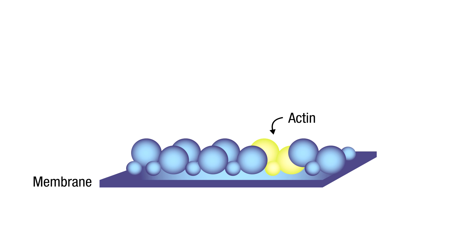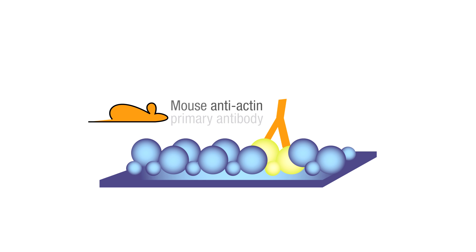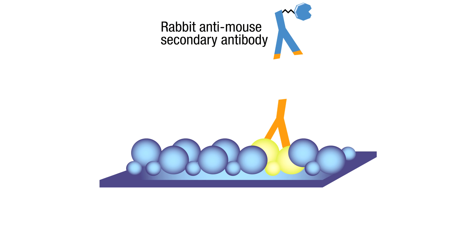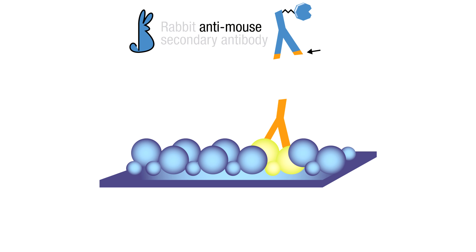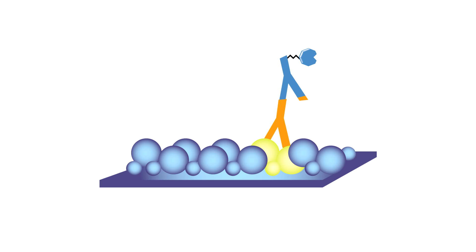For example, if you want to probe a human cell lysate for actin, and your primary antibody is a mouse anti-actin antibody — meaning it was collected from a mouse and specifically binds to actin — you would use a rabbit anti-mouse secondary antibody, which was collected from a rabbit and recognizes mouse antibodies. Because the only mouse antibodies on your blocked membrane are bound to actin, the rabbit anti-mouse secondary antibody will bind only to the mouse anti-actin primary antibody.